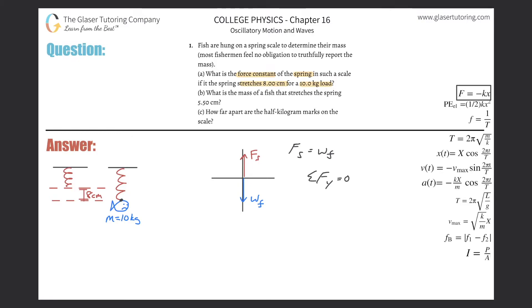Why? Because I know the variables. So the force of the spring, or the force that the spring produces on an object, will equal negative k — the spring constant — multiplied by the stretch of the spring. I'm going to write delta x here instead, basically the change in length. So expanding on that: the force equals negative k times (x-final minus x-initial).